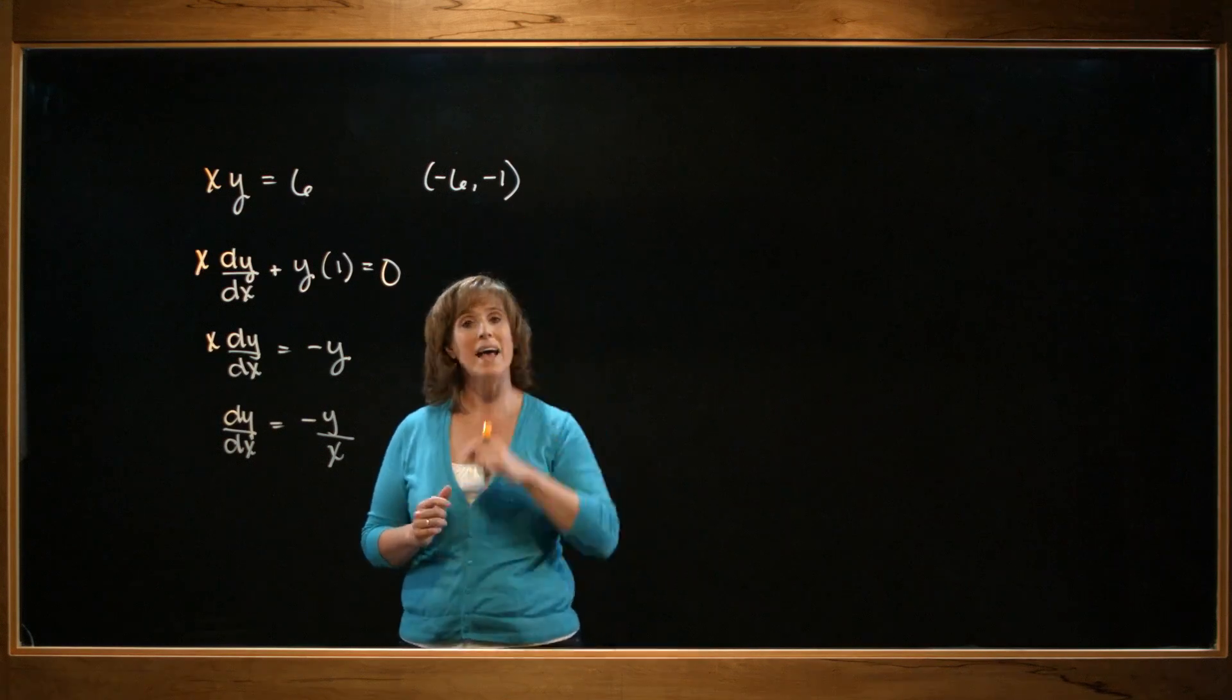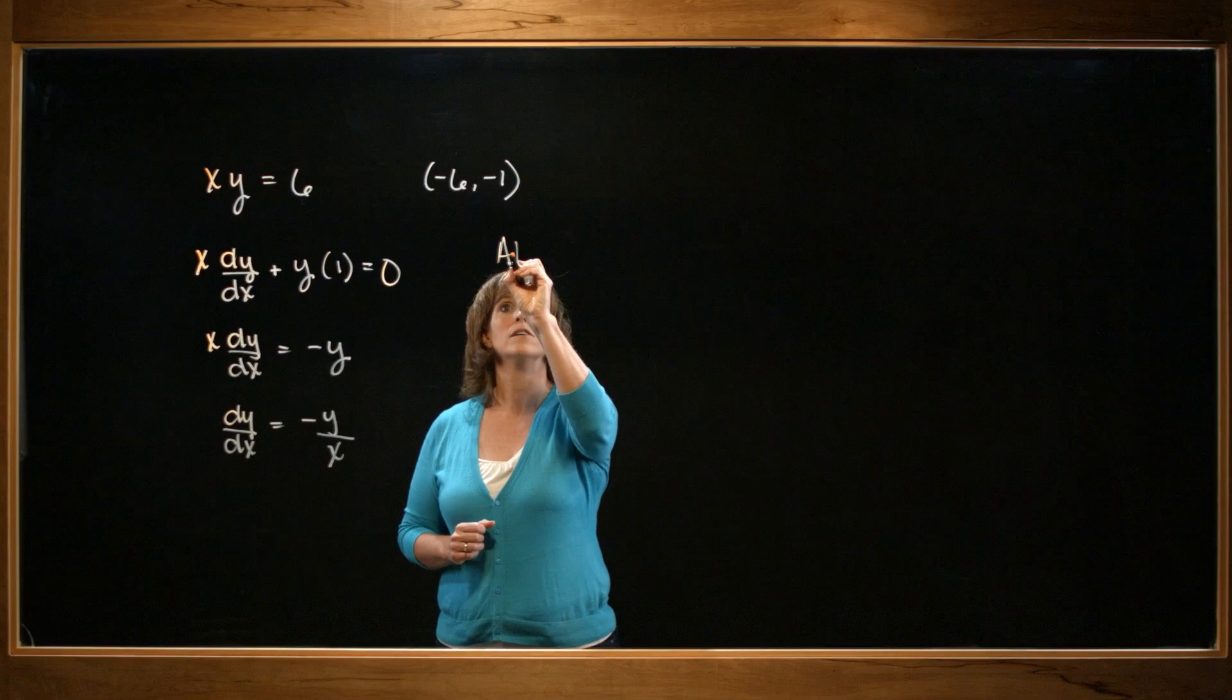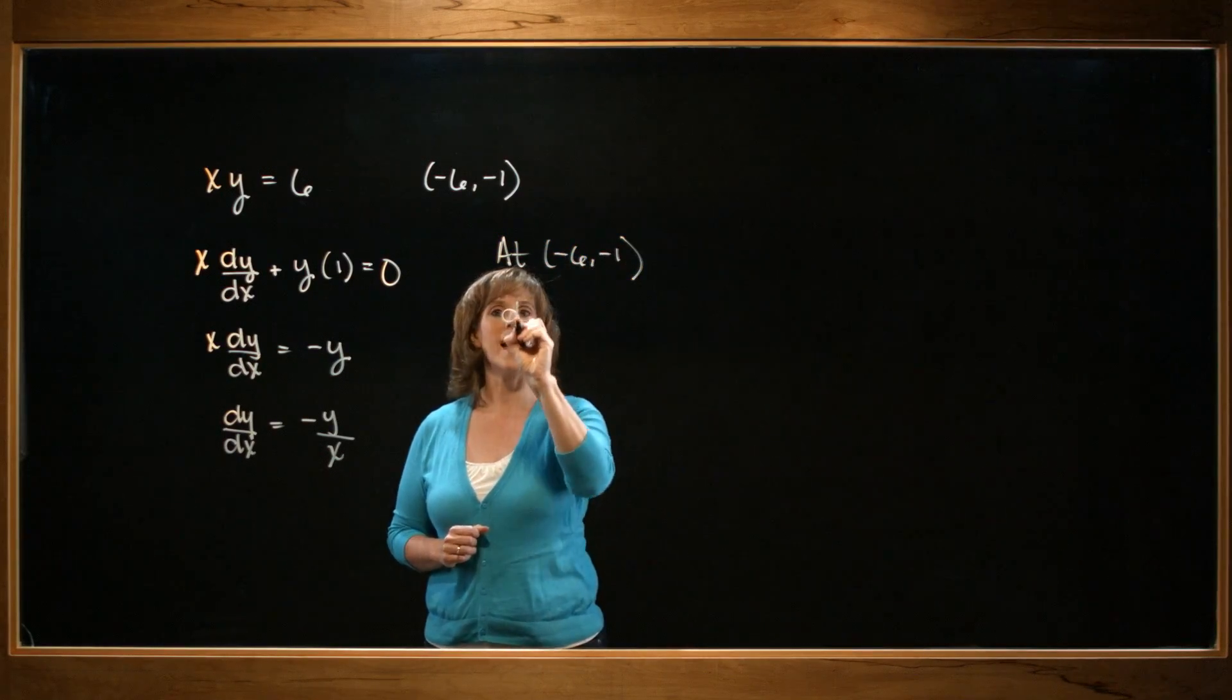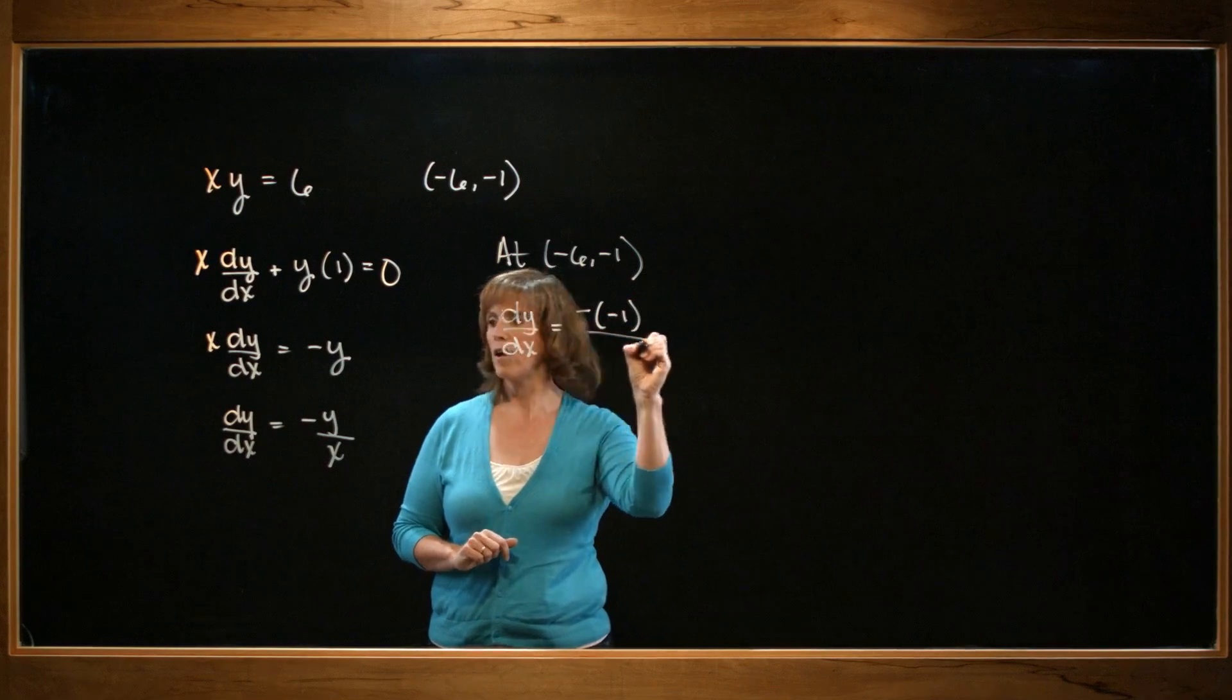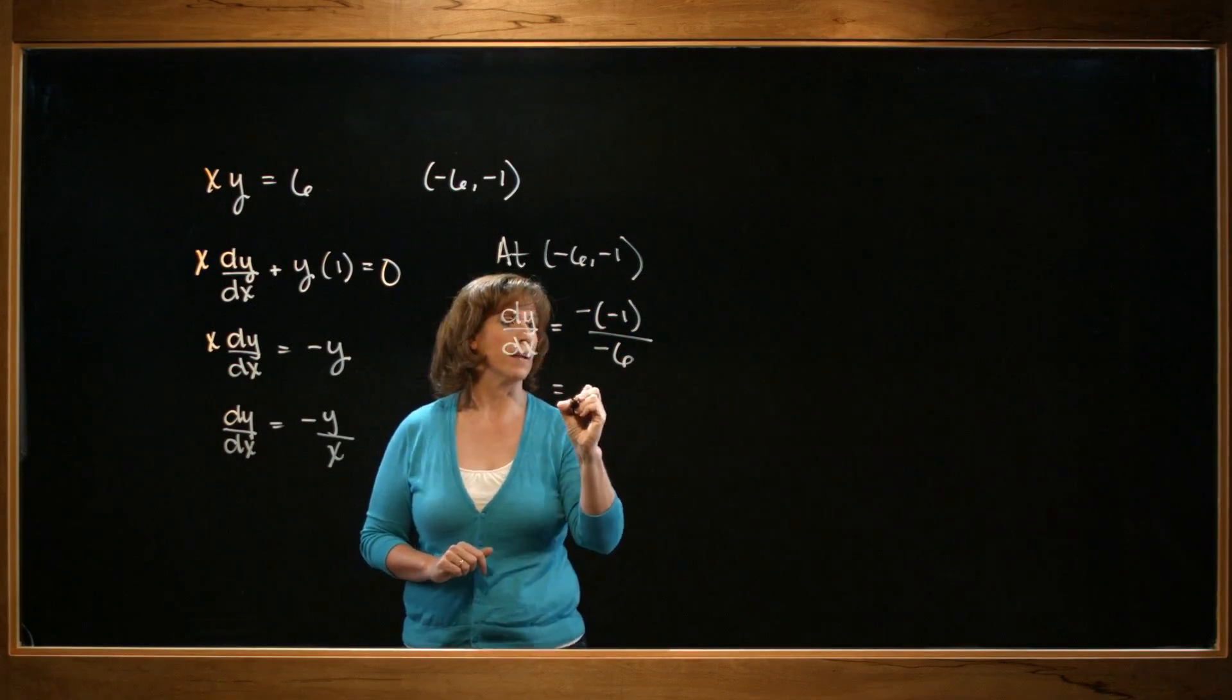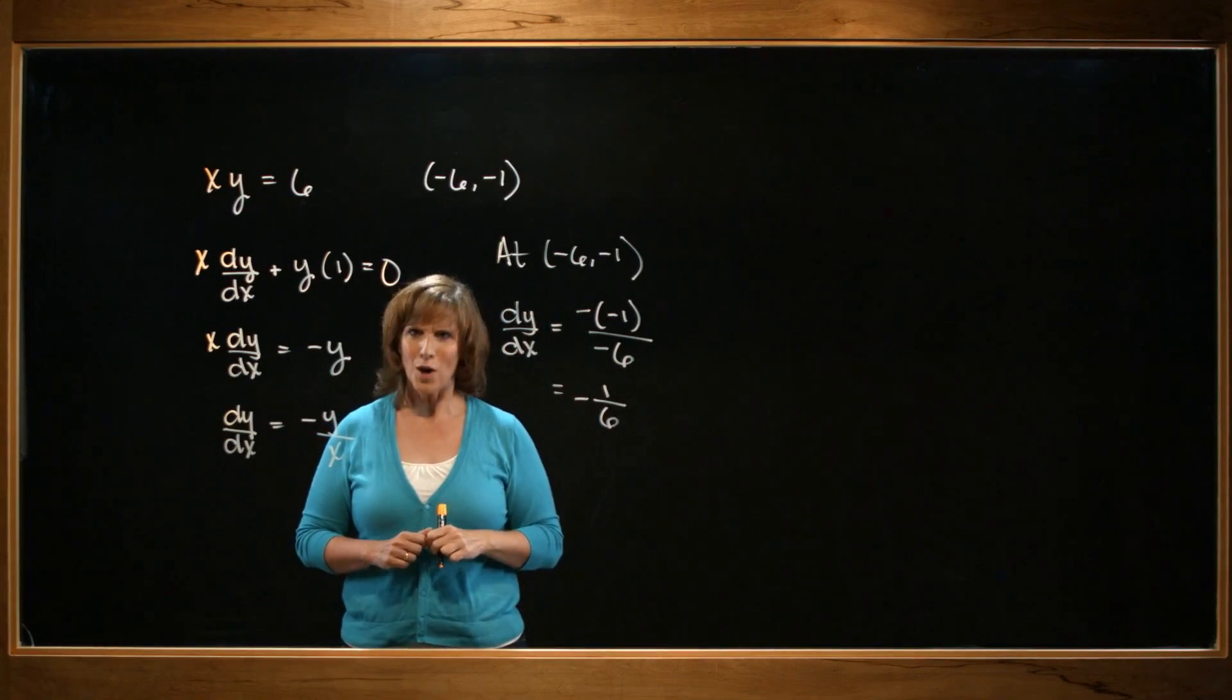Now I want to find out what happens at the point negative 6, negative 1. So at the point negative 6, negative 1, dy dx is going to equal negative y, so that's minus a negative 1, all over x, which is a negative 6, which gives me minus 1/6. I hope that was helpful.